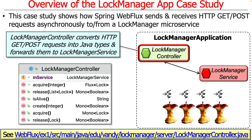There's a lock manager controller that plays the same role as always — it takes the HTTP GET and POST requests, turns them into Java types, and forwards them to the lock service. Looking at the interface exposed to the client, we have a bunch of reactive types for acquiring and releasing the various resources, returning Fluxes and Monos.